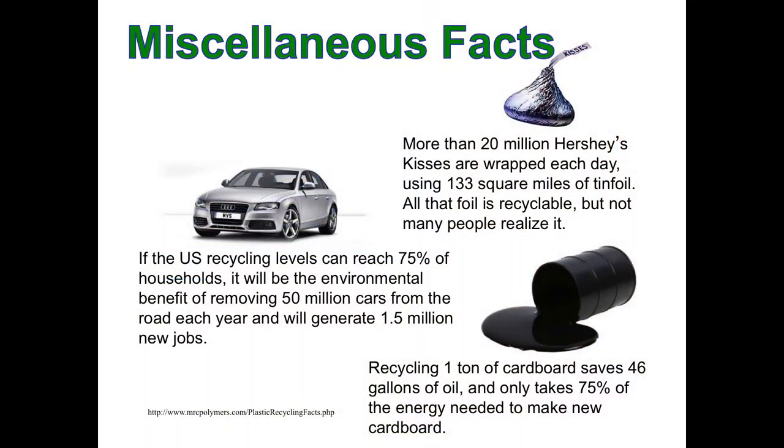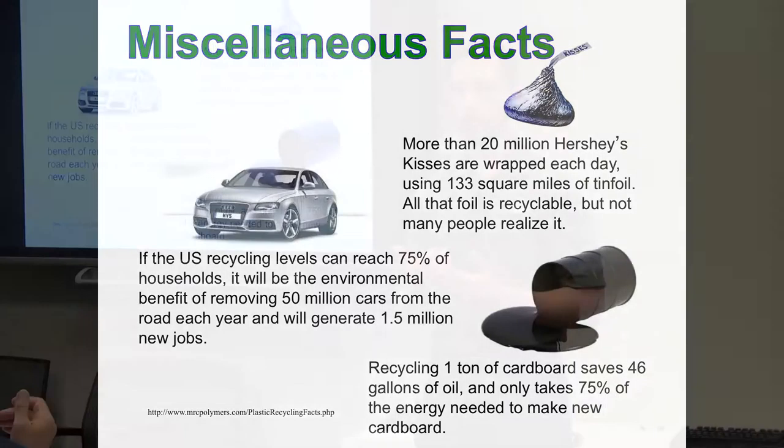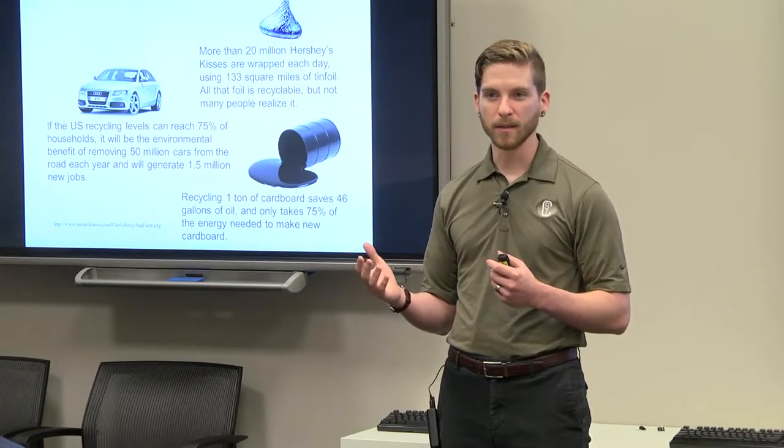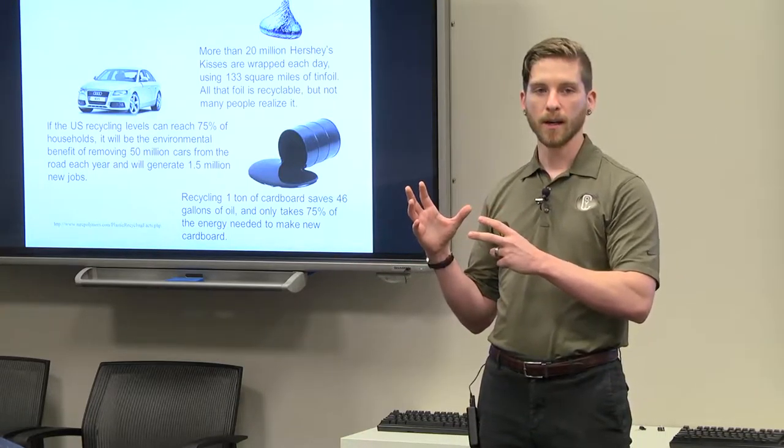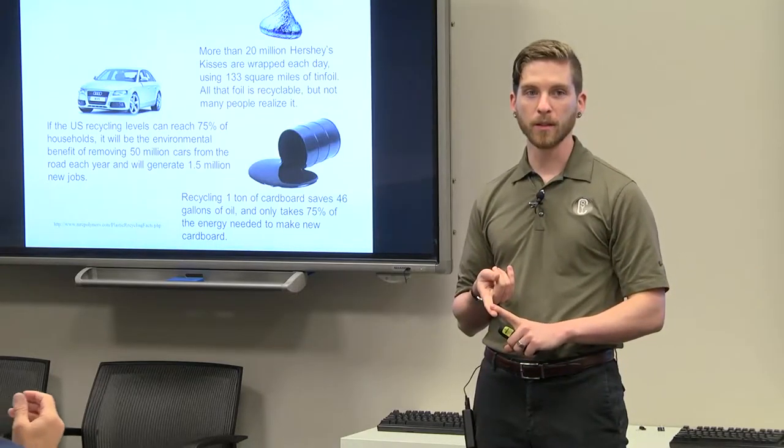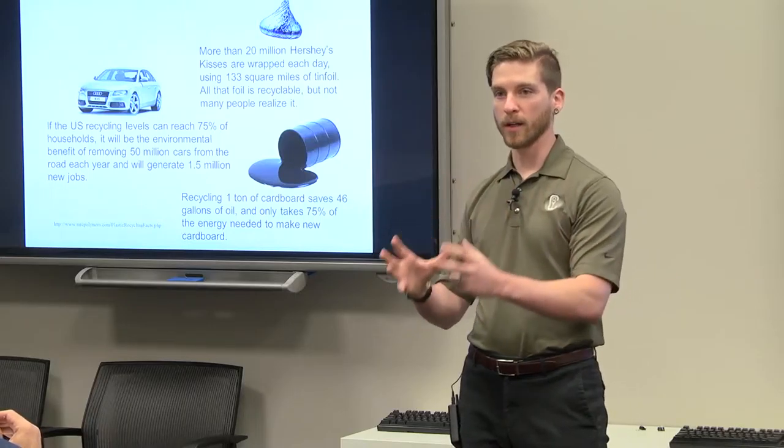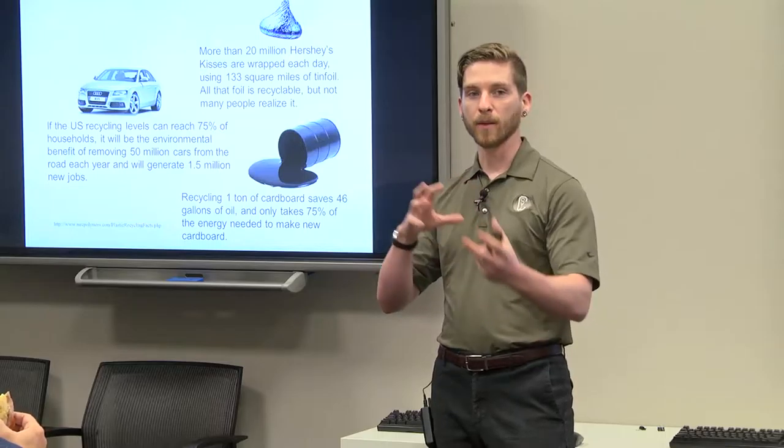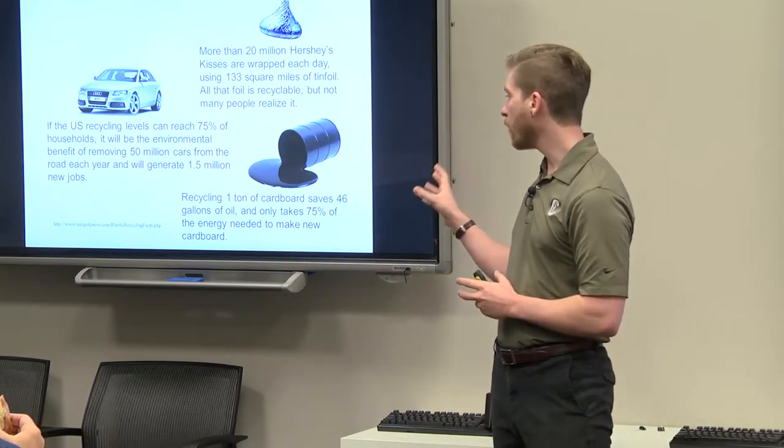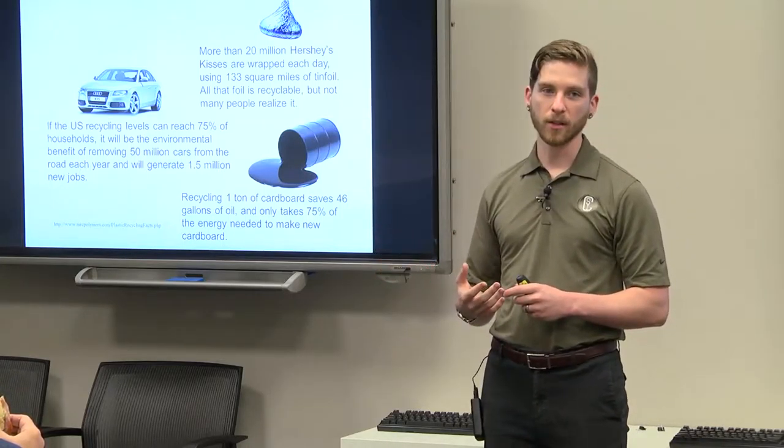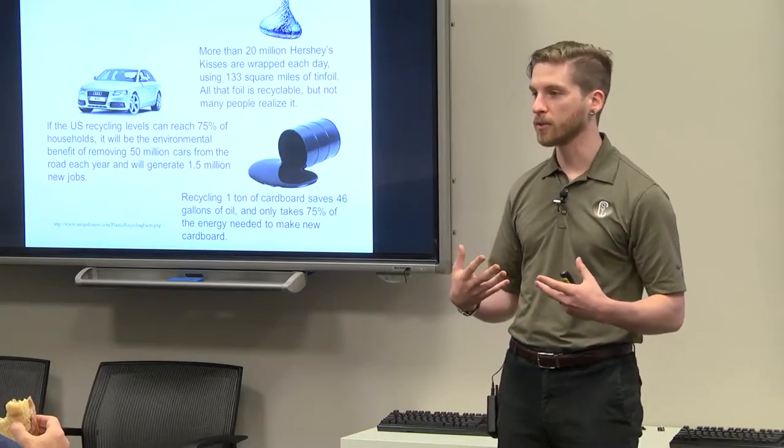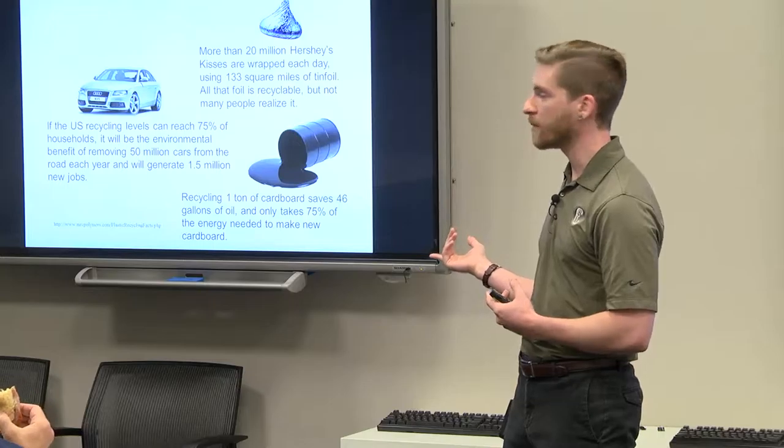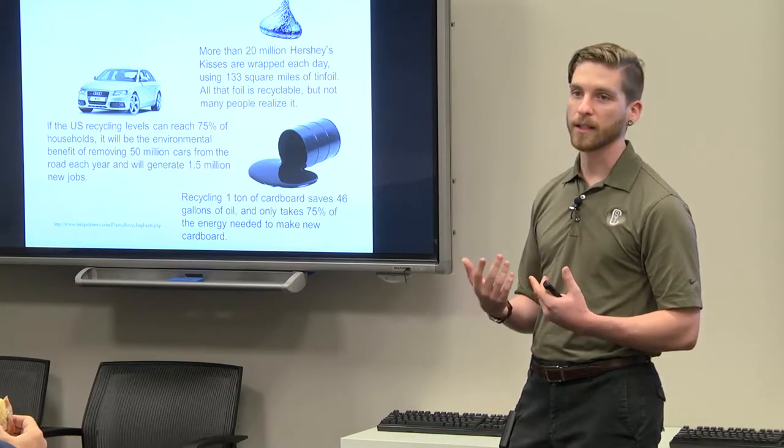Also, with cardboard, recycling one ton of cardboard saves 46 gallons of oil, and it only takes about 75% of the energy needed to make new cardboard. When I first saw that, I thought, how are cardboard and oil related? But what it turns out is that in order to produce cardboard, there's the logging machines and equipment used to cut down the trees, and then transport the raw materials to the processing plant, and then all of the machinery to turn that into paper and cardboard, and then transport that to the end user. A lot of the oil that it takes to get something to market comes from transportation costs. If you're recycling that, it's a much quicker drive from the recycling location to wherever it gets processed.